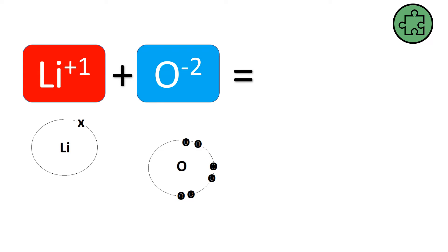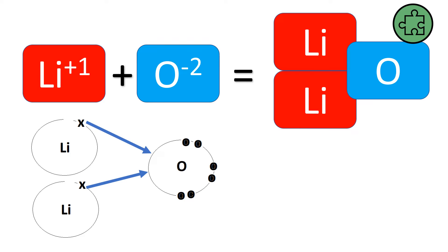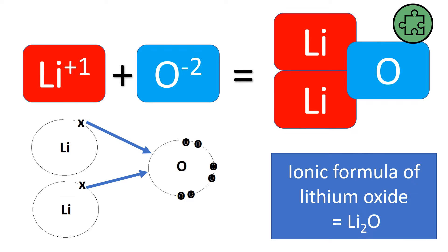But what happens when I've got something like lithium that only wants to lose one electron but oxygen that wants to gain two electrons? Well this lithium will give its electron to oxygen. Now lithium is stable but oxygen still isn't stable. It still needs another electron. So what will happen is that another lithium will also transfer its electron. So it actually takes two lithiums to balance one oxygen. And so the formula is Li2O.